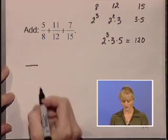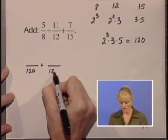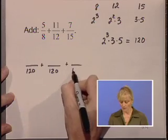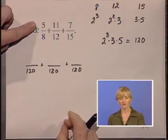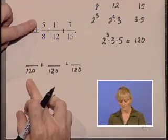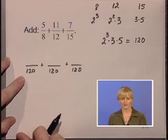We are going to build equivalent fractions for each of our original fractions. Our new denominator is now 120. We will multiply each original numerator by a factor that the old denominator was multiplied by to come up with this new LCD.